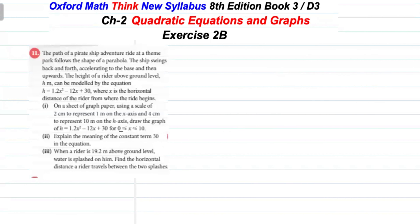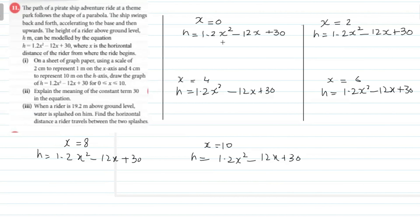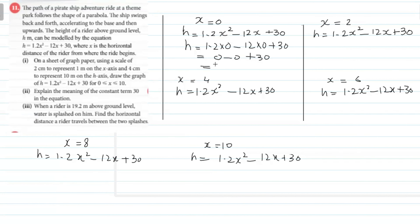میں x کی 6 different values لے لیتا ہوں 0 سے 10 کے between: 0، 2، 4، 6، 8 اور 10۔ اب ان values کو equation میں substitute کر رہا ہوں۔ x = 0 کے لیے: 1.2(0) − 12(0) + 30 = 0 − 0 + 30 = 30۔ تو h کی value 30 آئی۔